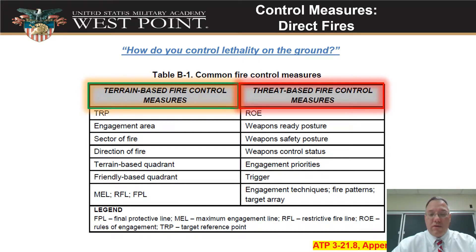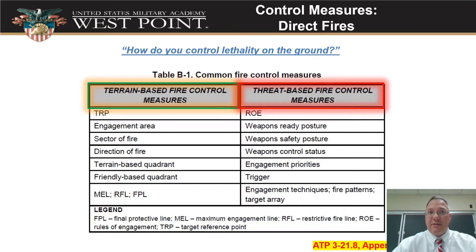Those are all terrain-based fire control measures. On the threat side you have your ROE — what is the enemy doing determines whether or not we're going to engage them. We also have our weapons posture and weapons control status. Weapons control status might be something like weapons-free, where if you can't identify something as friendly, you better shoot it down, versus something like weapons-tied or weapons-hold, where maybe you only want your soldiers to shoot back after they've been fired upon.